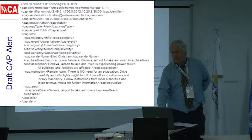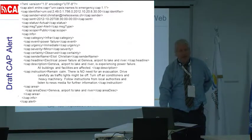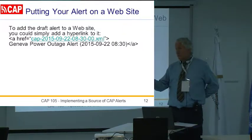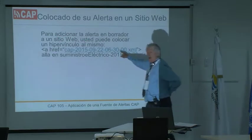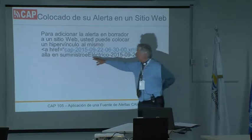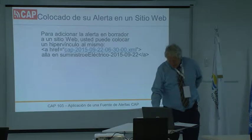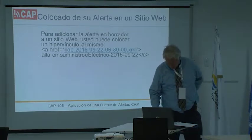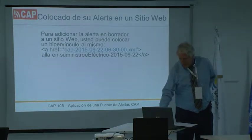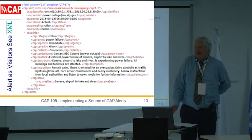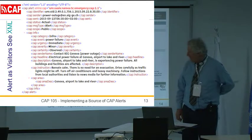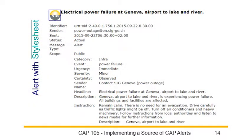How do you put your CAP alert onto an internet host? It's a file, so you make a link to it. Go to your home page for your agency, make a pointer to the file you just created, and the link has the description — in this case, 'electrical power failure, Geneva, airport to lake and river.' When a user goes there, they see XML. So you use this little stylesheet right here, which takes that XML and makes it pretty — puts your header on, you have a footer, it's nicely indented, but it's XML underneath so machines can still process it.